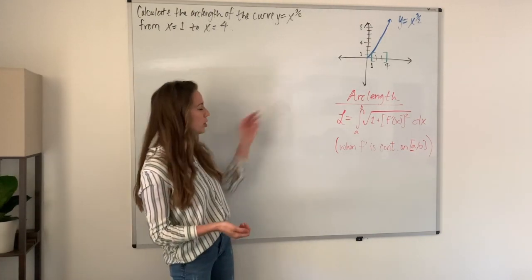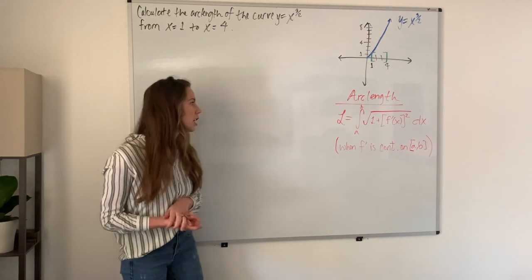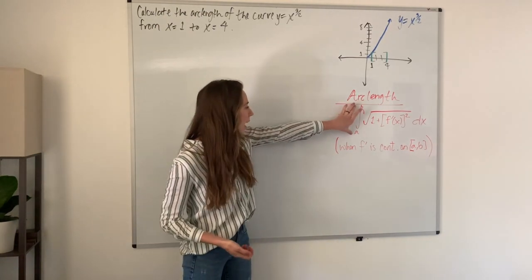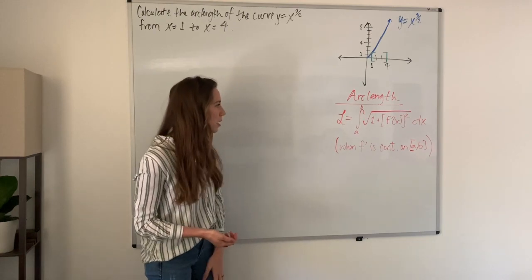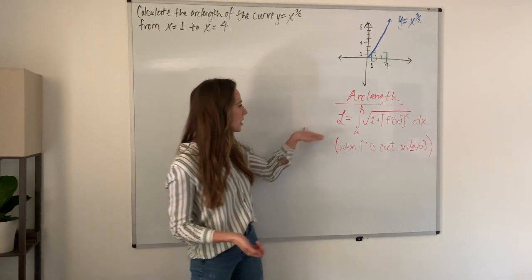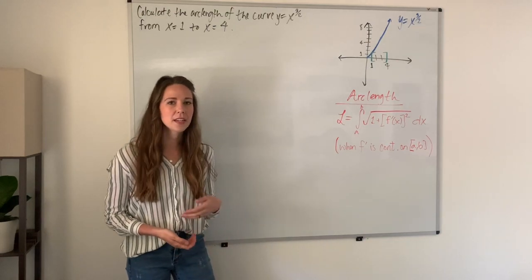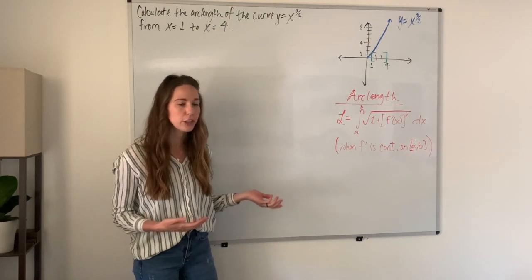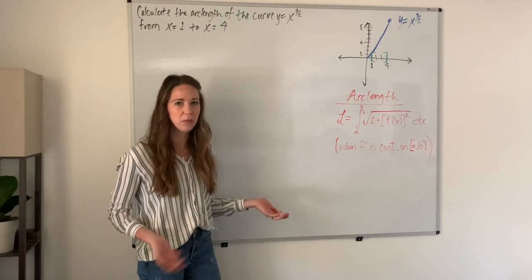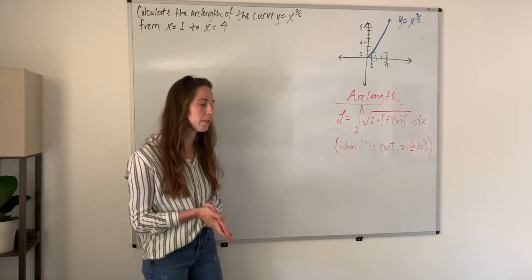Over here I've written the formula for arc length. We need to have an interval a to b. We also need to have a function whose derivative is continuous. That's a condition for using this. All the problems you'll see, that condition will be met.